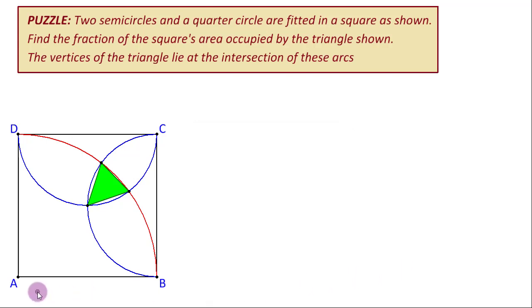The puzzle goes something like this. There is a square A, B, C, D given to us within which there is a quarter arc enclosed here with center A and two semicircles over here and the second over here with these sides as their diameter. And these three arcs have these three points of intersection which define this triangle. We need to find what fraction of the area of this square is occupied by this area of triangle.